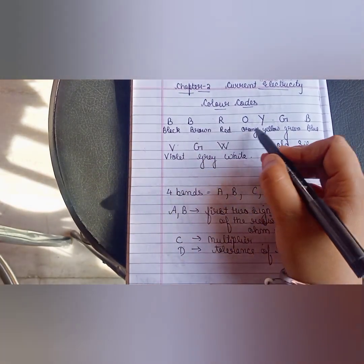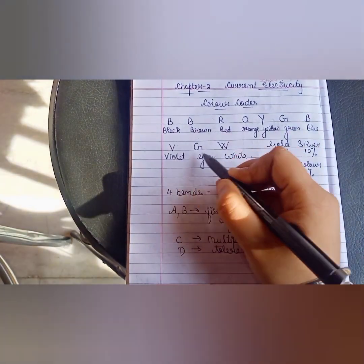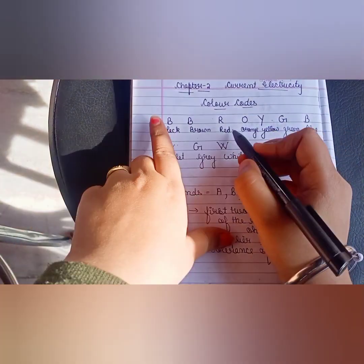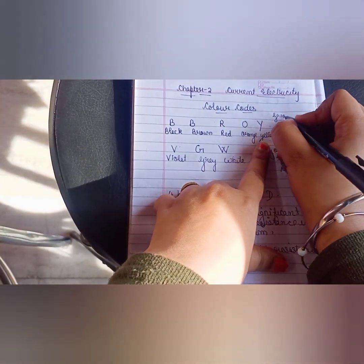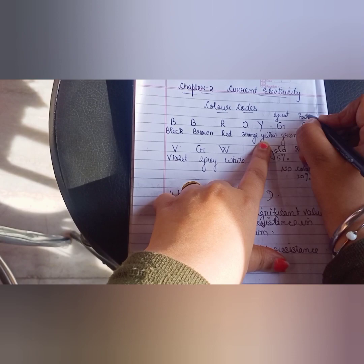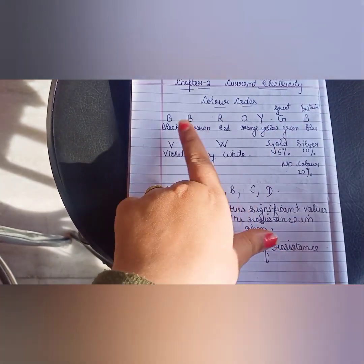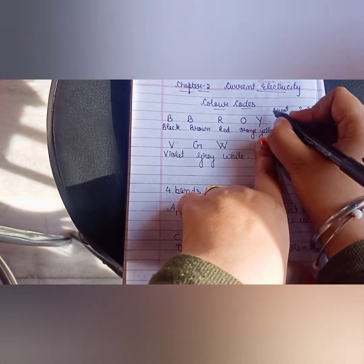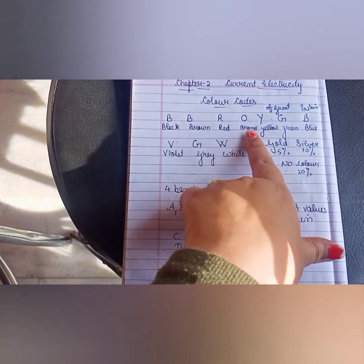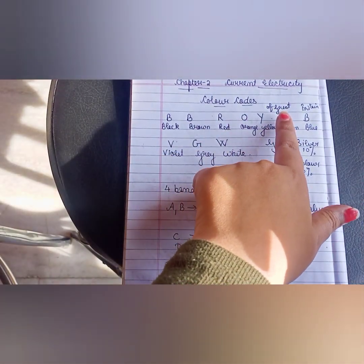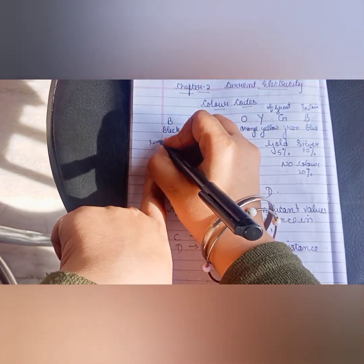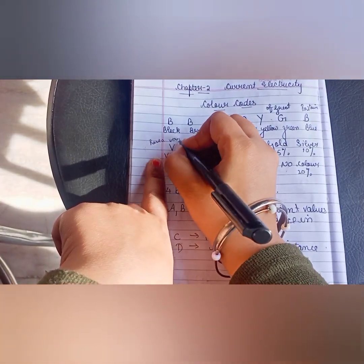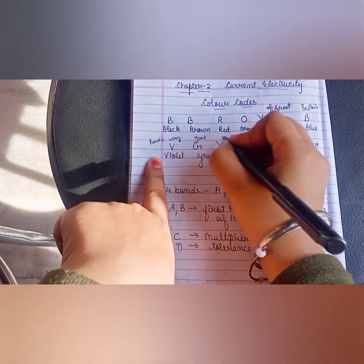This is B, B, Roy. Great Britain. Very good wife. Yes, B, B, Roy of Great Britain. B, B, Roy of Great Britain. The name is B, B, Roy. Where is he? Great Britain is there. Has a very good wife.